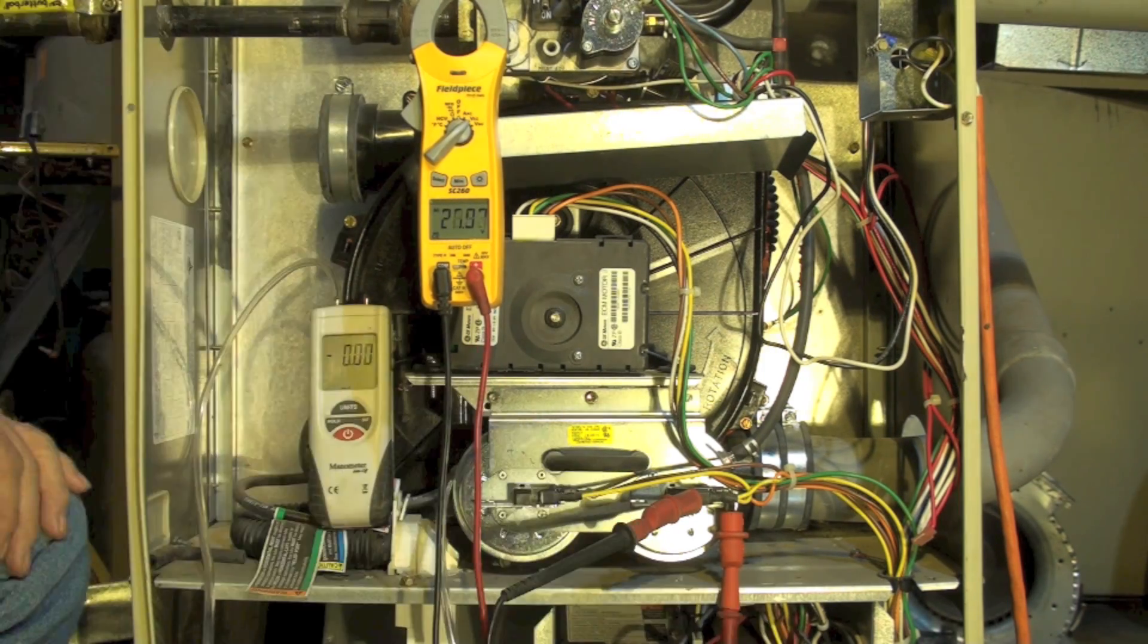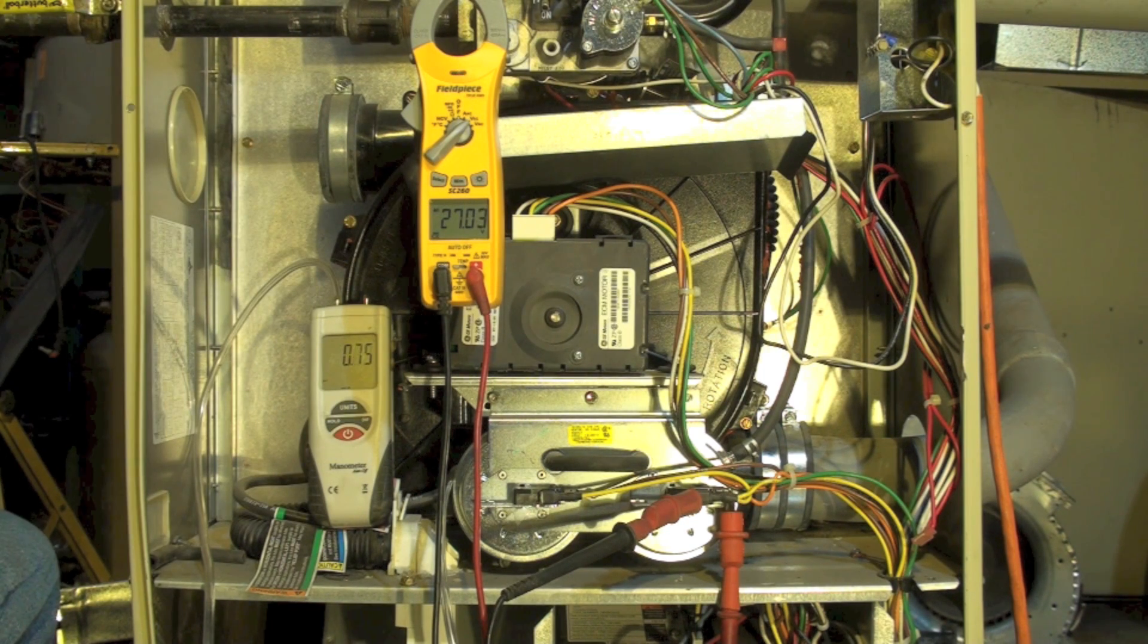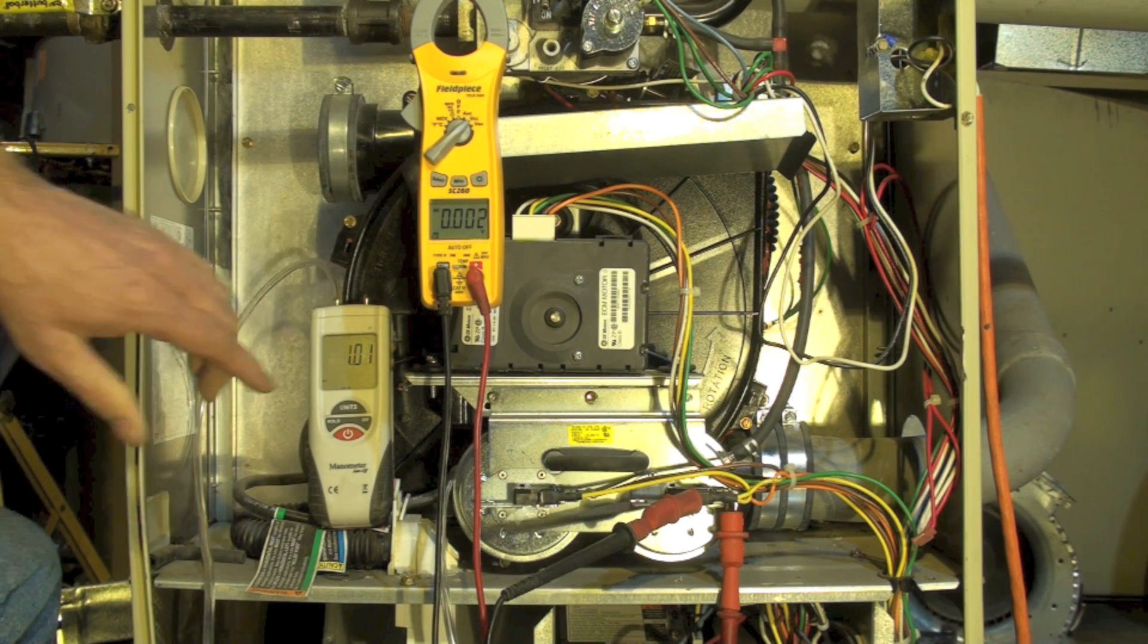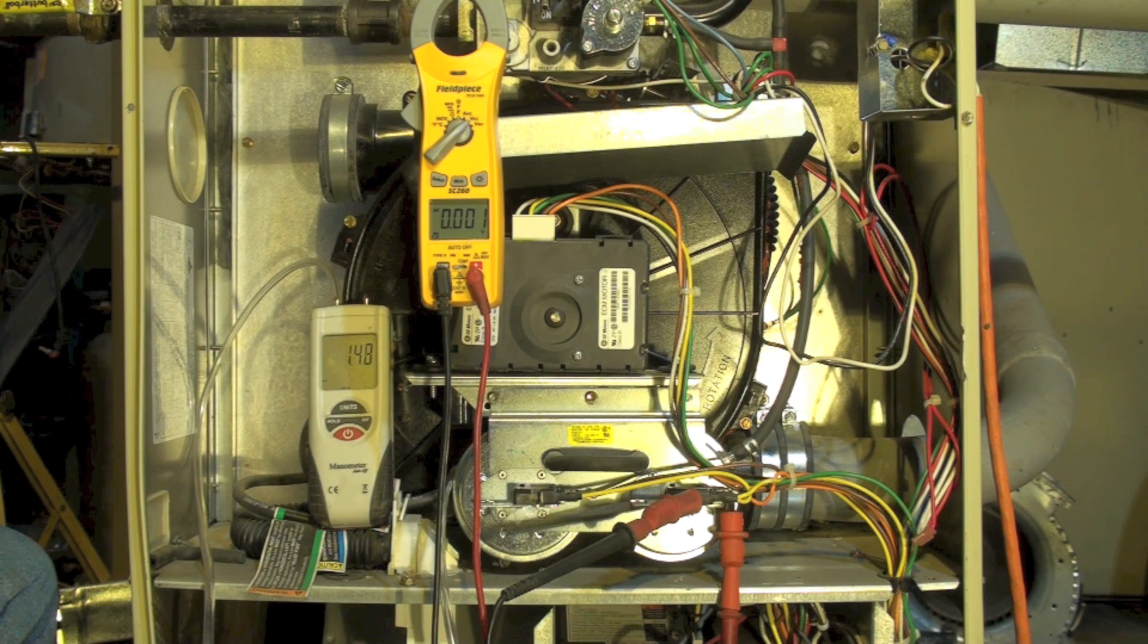Okay, it's on. Notice we have our pressure switch open. Now it's closed. It was a little below one, it was actually about point seven eight or nine or something like that. Okay, now it's going to go through the trial for ignition. It'll warm up the hot surface igniter and then it's going to light the burner.